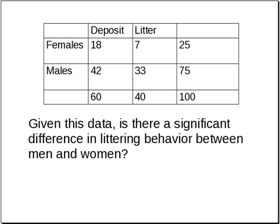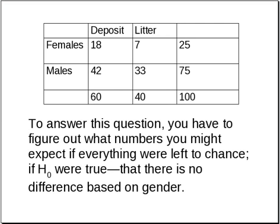After you do your observation, you find the following data. Given this data, is there a significant difference in littering behavior between men and women? To answer this question, you have to figure out what numbers you might expect if everything were left to chance — that is, if the null hypothesis were true, that there is no difference based on gender. In that case, you would expect the responses to be equally distributed through all the possibilities.